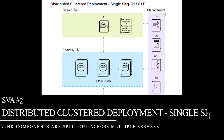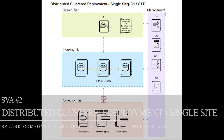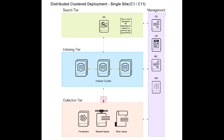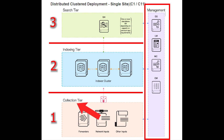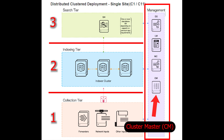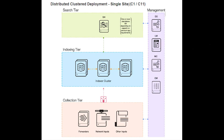The second SVA is the Single Site Distributed Clustered Deployment. In this model, the major Splunk components are separated from each other, establishing a three-tier approach with a separate management plane. The first tier is the Collection tier, which includes Universal Forwarders, Heavy Forwarders, and all other data sources. The next tier is dedicated to data ingest and parsing — it's called the Indexing tier. In this tier, there are two or more indexer servers centrally managed by an Indexer Cluster Master. The Indexer Cluster Master is a standalone Splunk component installed on a separate server, possibly along with other management components like a License Master, Management Console, and Deployment Server.